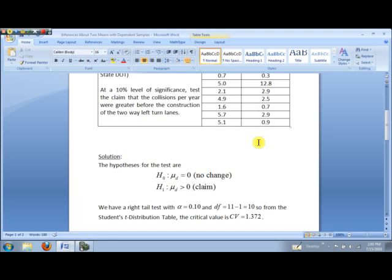And so now we can just use the student's t-distribution table, that would be table A3 in your book, to get the critical value of 1.372.